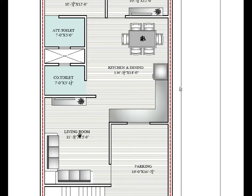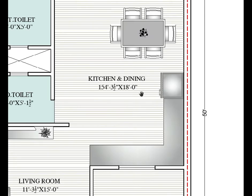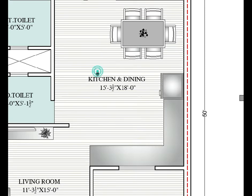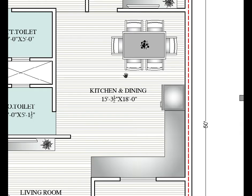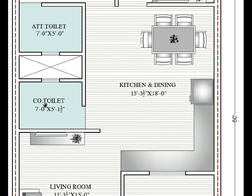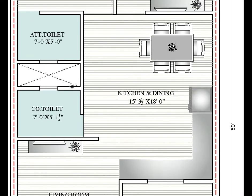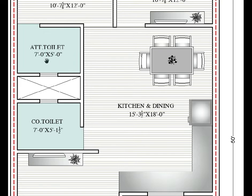Here is a kitchen with an interconnected dining block. The kitchen and dining area combined is 15 feet 3 inches by 18 feet — 15 feet 3 inches horizontally and 18 feet vertically. A common toilet is also provided here.